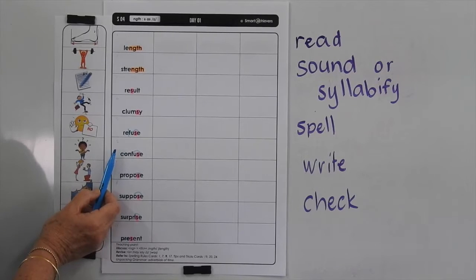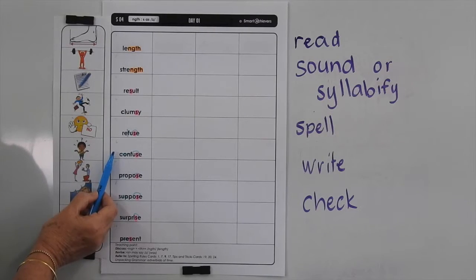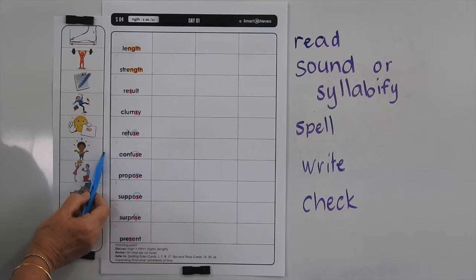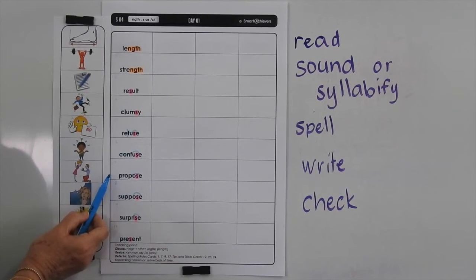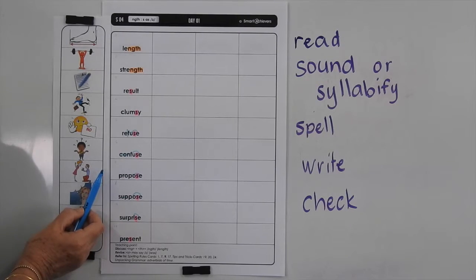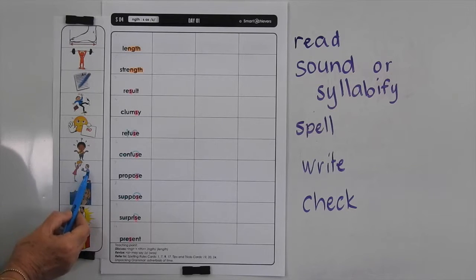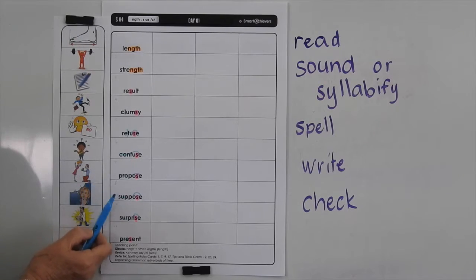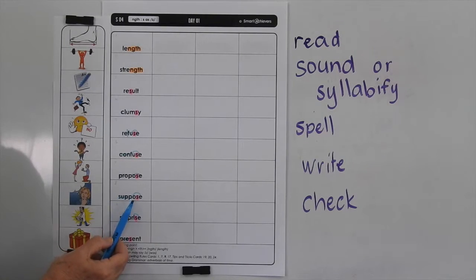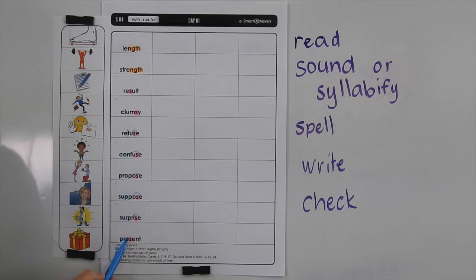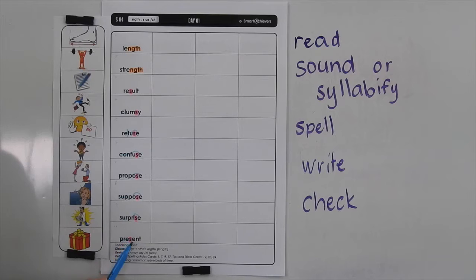Confuse means that you're perplexed or you don't know, you can't understand something. Propose is where you're suggesting something — or it could be, as shown in this picture, an offer for someone to marry you. Suppose is where you assume something. A surprise is a shock, and a present is a gift, or you may be present, which means something is happening now.